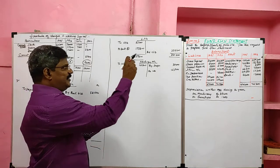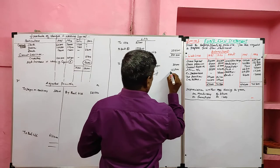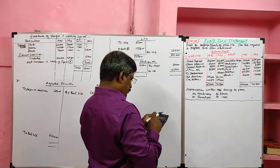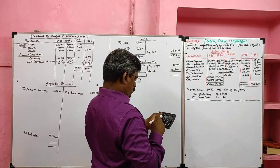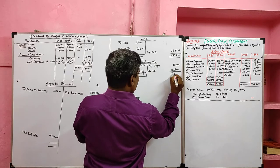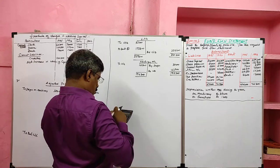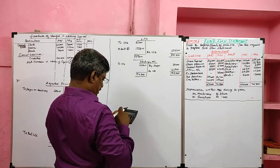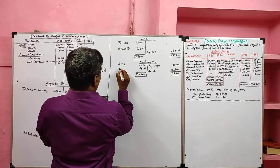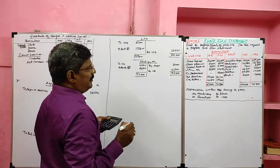If current year depreciation is given, it should be credited to the fixed asset account and debited to the adjusted profit and loss account. Totaling the credit side: 38,400 plus 1,53,900 equals 1,92,300. Minus opening balance 1,06,800, the difference is 85,500, considered as purchase of machinery to bank — it goes to the application side.